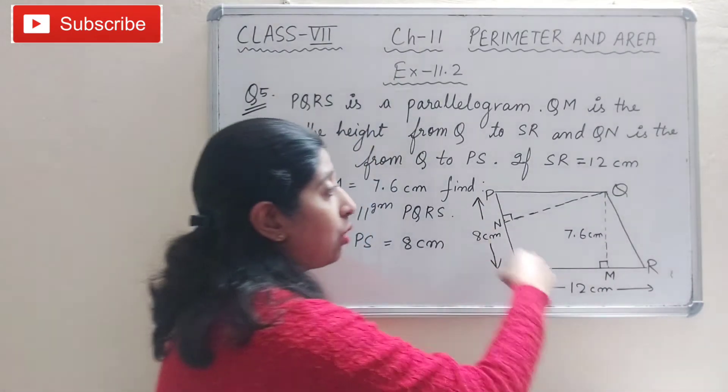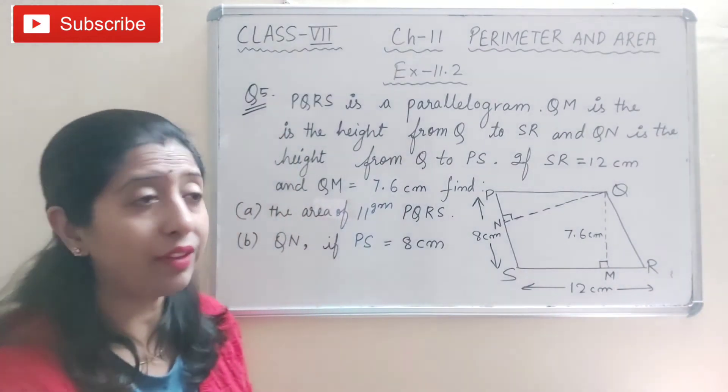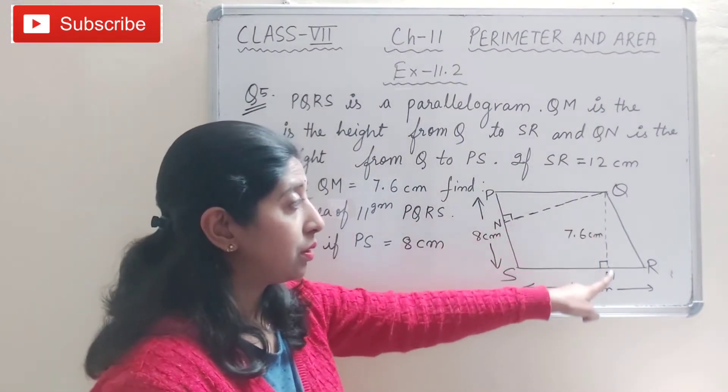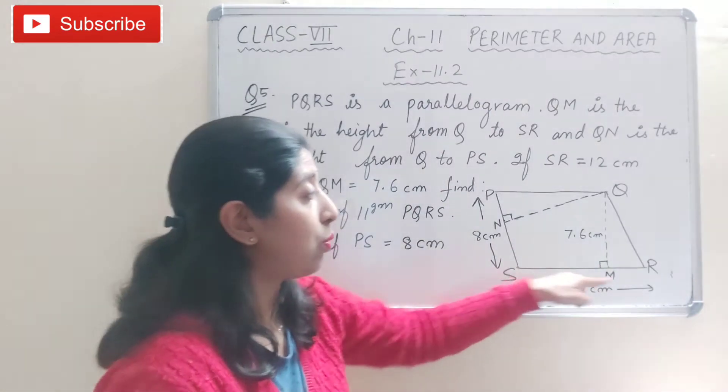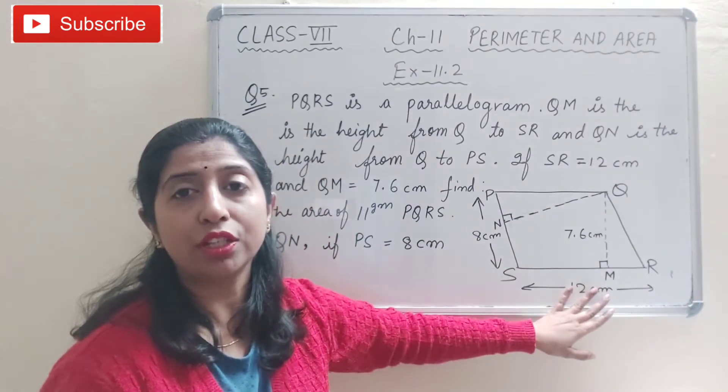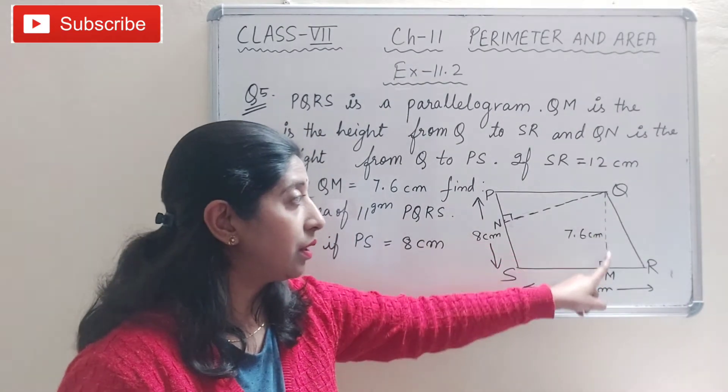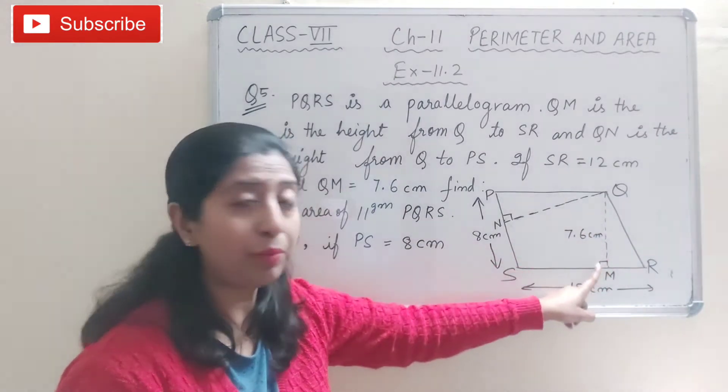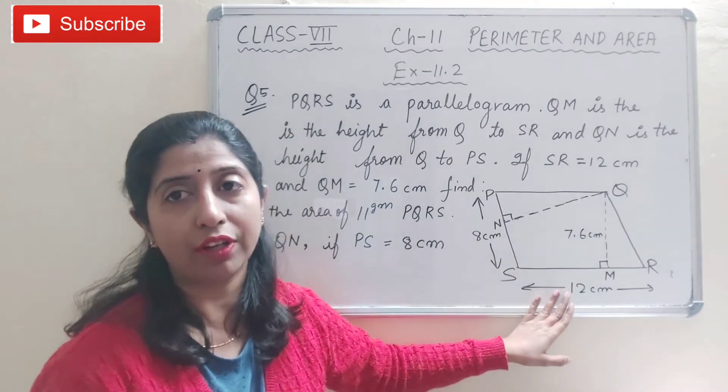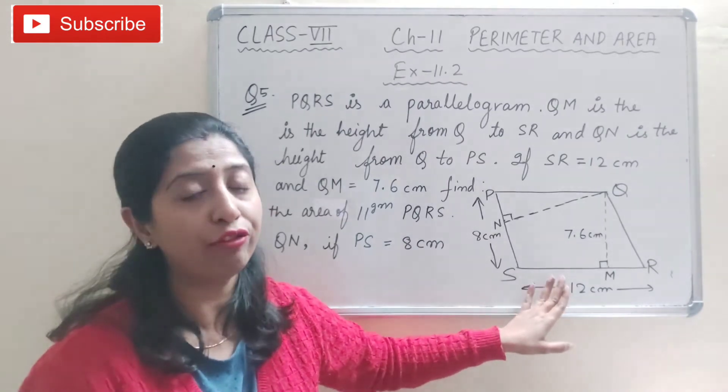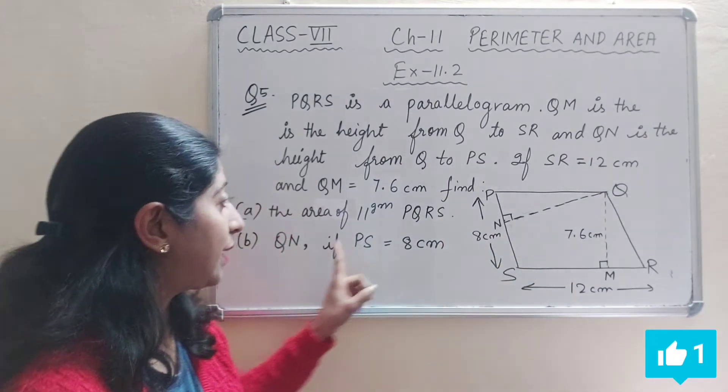So two things we have to find out. First, the area of this parallelogram. That is very easy to find out because this corresponding height and base are known. This height we know and this base is also known, so we can find out the area.